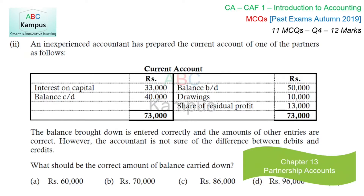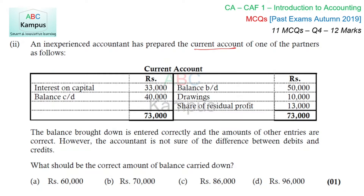Next question is from Chapter 13, Partnership Accounts. An inexperienced accountant has prepared the current account of one of the partners. The balance brought down is entered correctly and the amounts of other entries are correct. However, the accountant is not sure of the difference between debits and credits. What should be the correct amount of balance carried down?